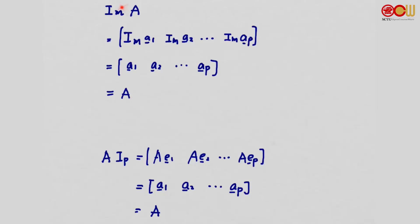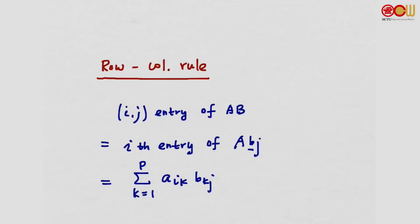So it doesn't matter whether the identity matrix is at the front or at the back — the product always gives us matrix A. You may have also learned the row-column rule: the (i,j)-th entry of AB is the i-th entry of A·Bj. By definition of the matrix-vector product, this equals the sum over k from 1 to P of A_{ik} · B_{kj}.